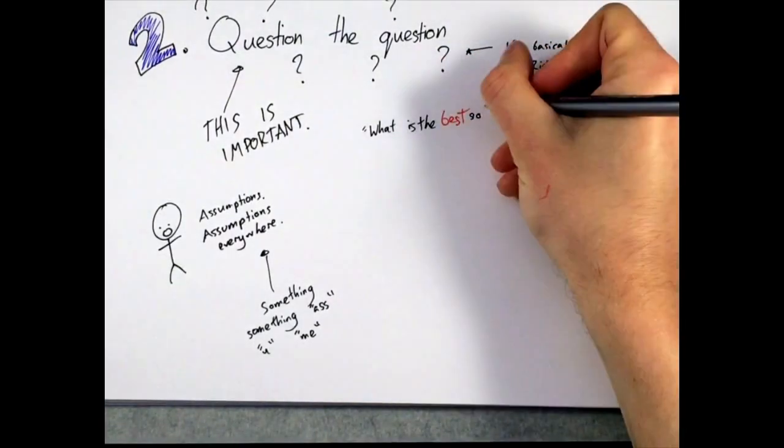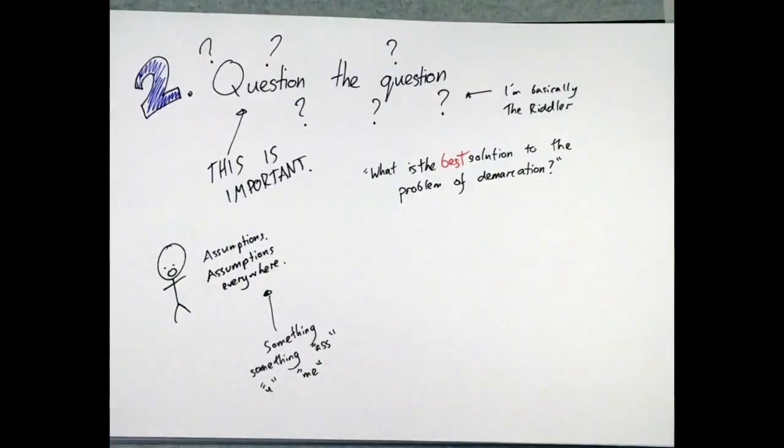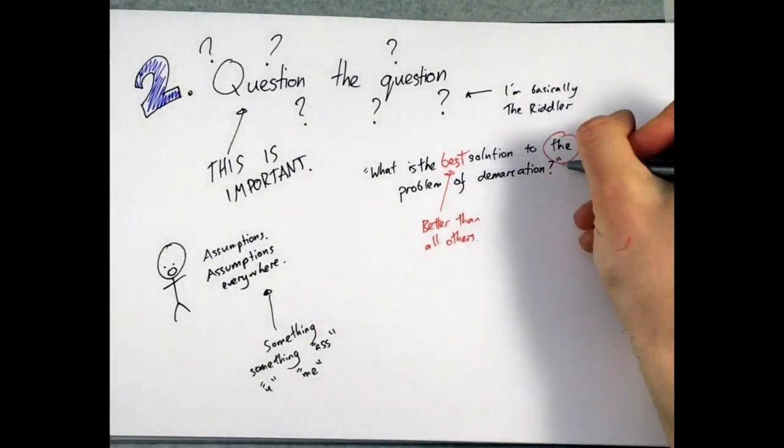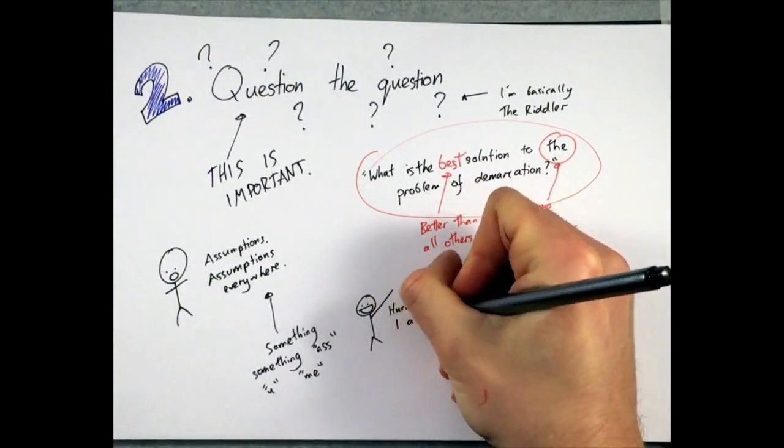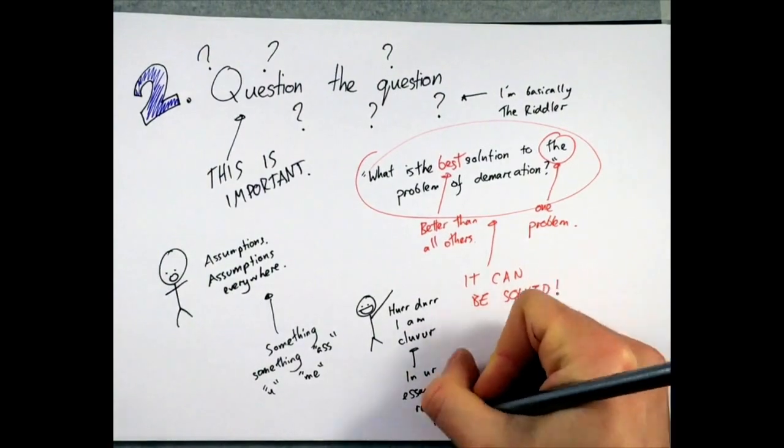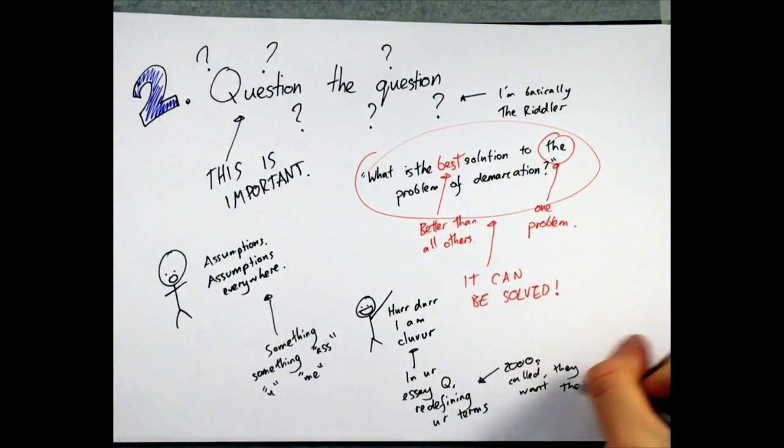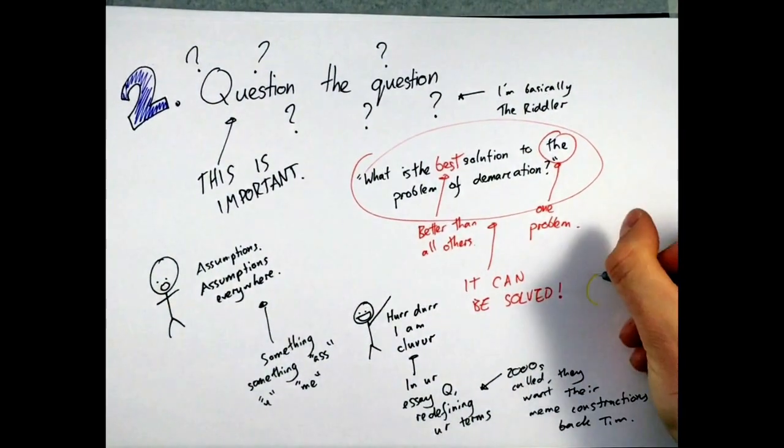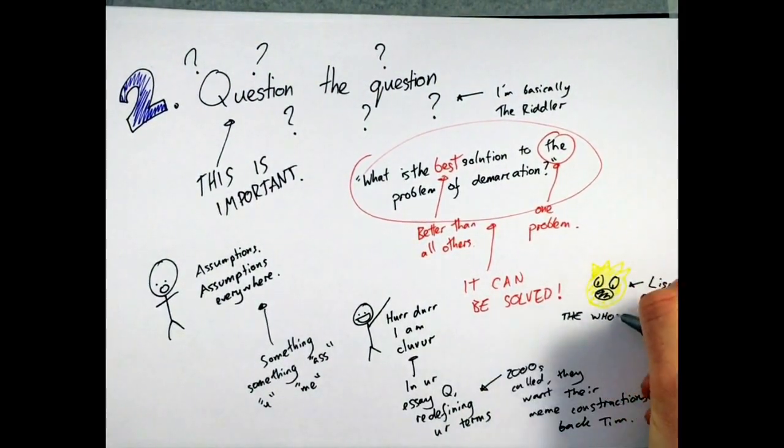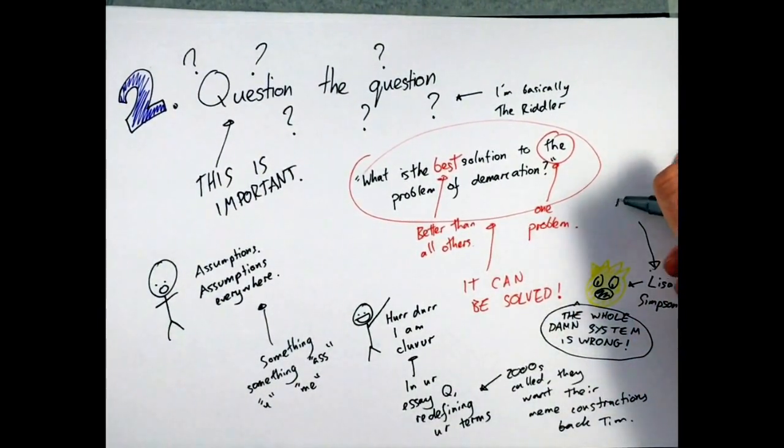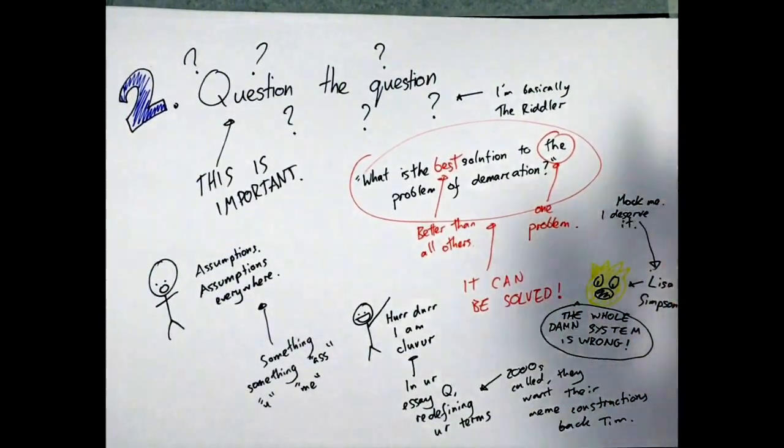For example, in the question about the demarcation problem above, there are assumptions that there is a single problem of demarcation, as well as a single best solution to that problem. Sometimes it's enough to point out that these assumptions exist, and then to proceed with the essay by clarifying the definitions you're using and the assumptions you're working with. Sometimes you might think that the assumptions are fundamentally mistaken, or disguise a more important question. In that case, you'll need to point this out, and then you'll need to proceed to explain why, and to make your arguments within the essay using a revised understanding of the question.